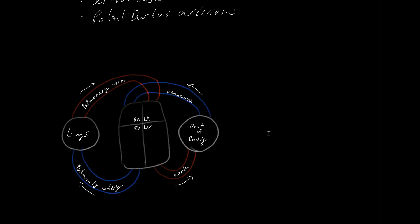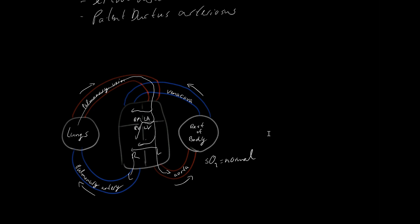Septal defects may occur at various locations. Because the pressure in the left heart is usually higher, oxygen-rich blood arriving through the pulmonary vein flows across the defect to the right side — creating a left-to-right shunt. Blood that still flows to the aorta is normally oxygenated, so O2 saturation is normal. However, there is a waste of oxygen-rich blood recirculating through the pulmonary artery, so the heart wastes time and energy.